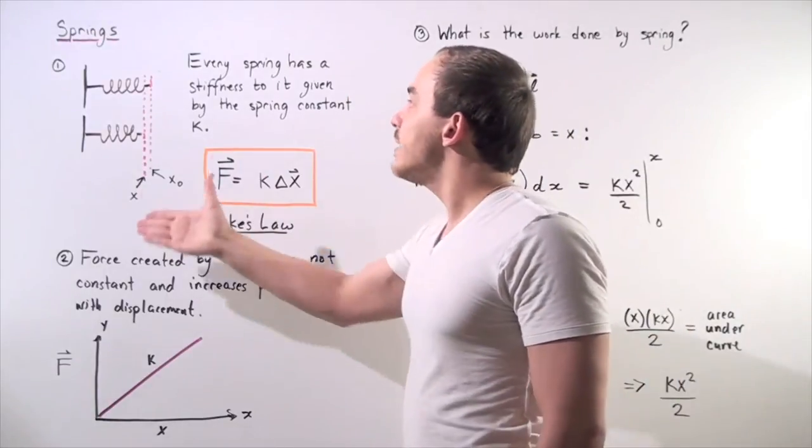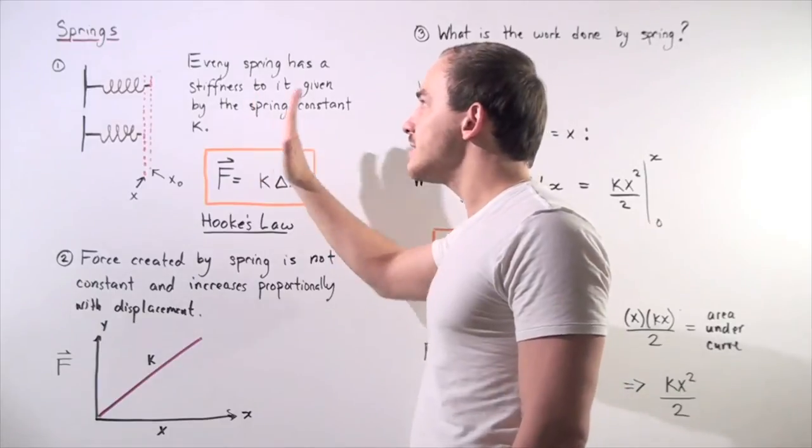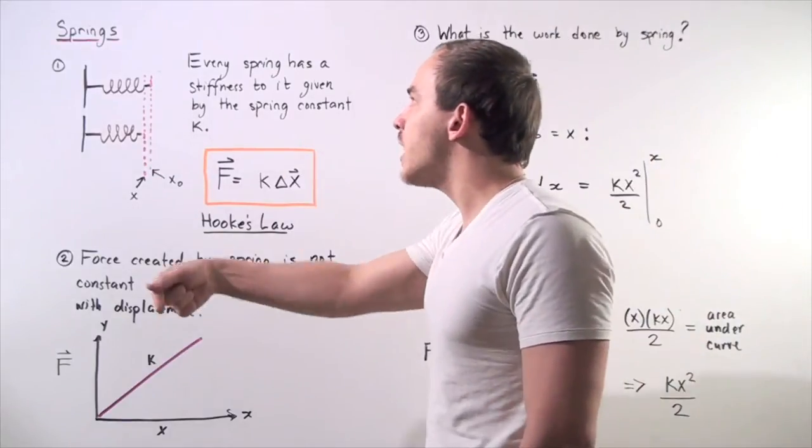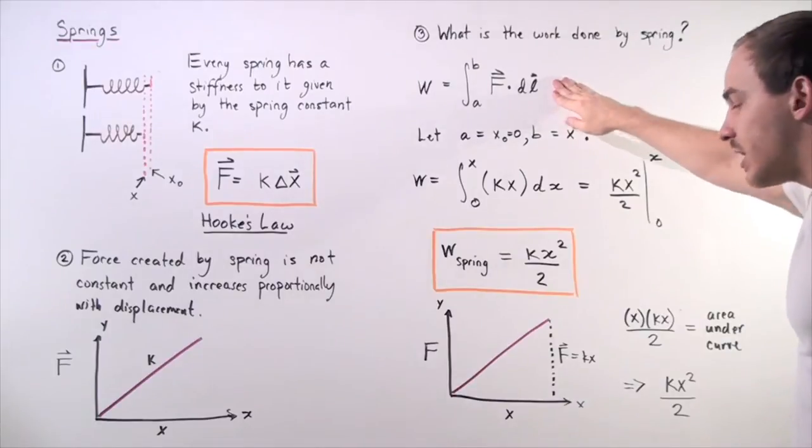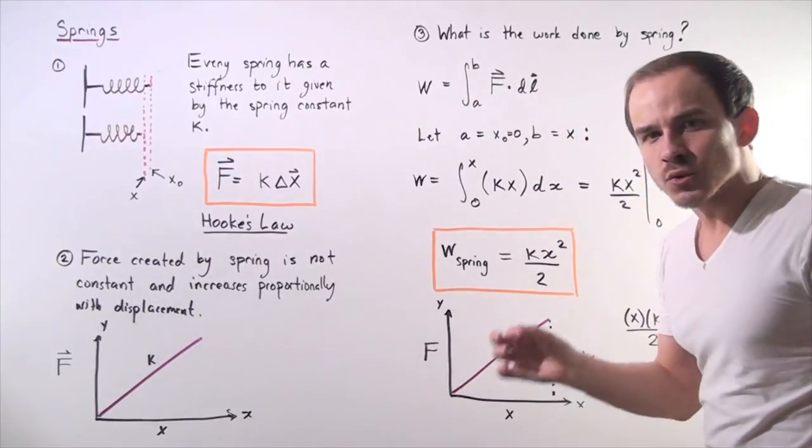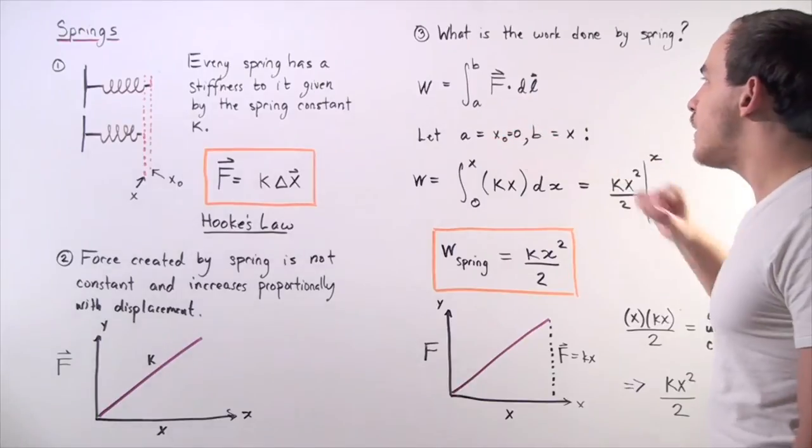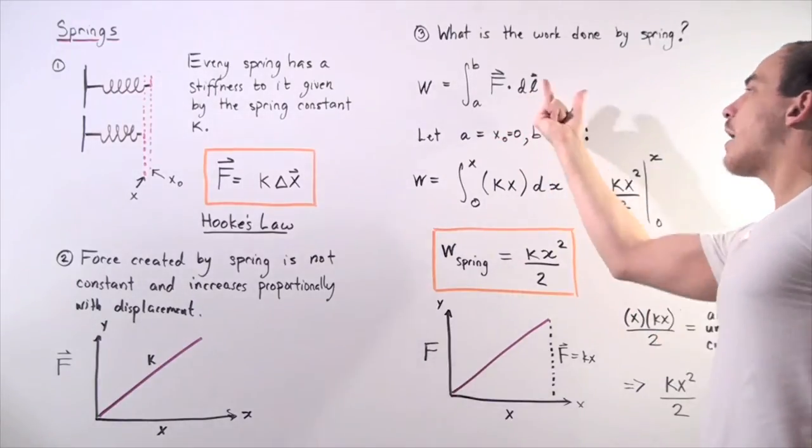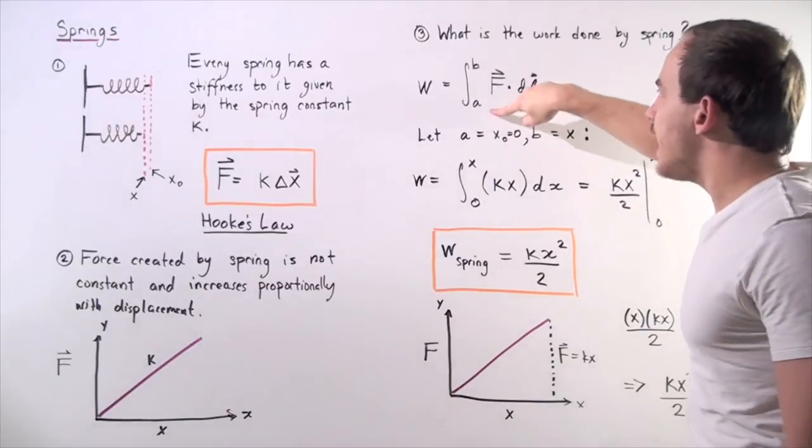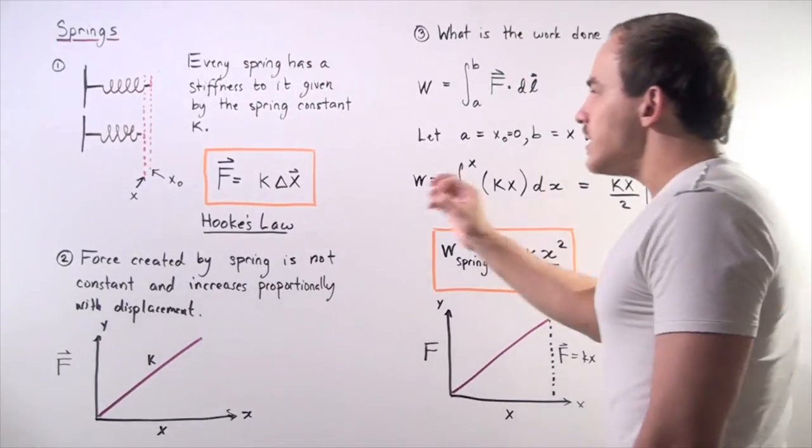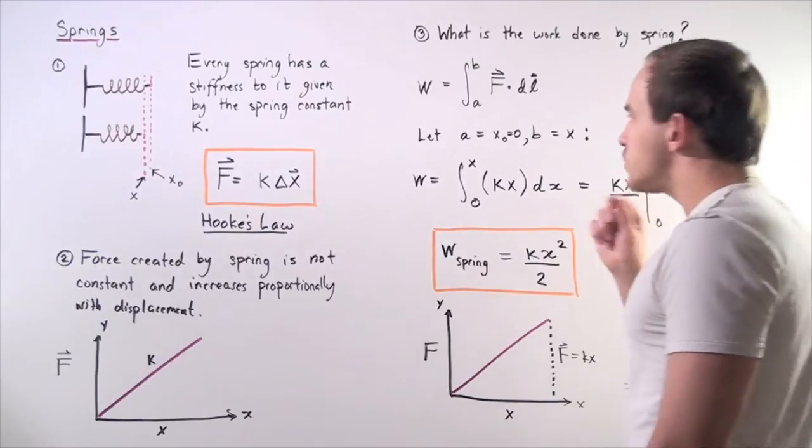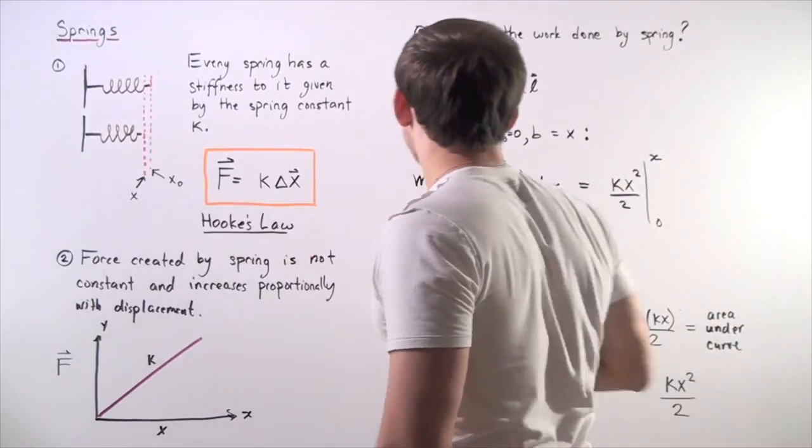So because my force created by the spring on my object, in this case the hand, is not constant, that means if we want to find the work done by the spring on my hand, we have to use the following formula. We have to integrate. So the work done is equal to the integral of the dot product of these two vectors. The infinitely small change in distance, our displacement vector, multiplied by our force vector, and we take the integral from A to B of this dot product. So let's suppose that A is our x-axis and that's zero along the x-axis, and let's suppose our B is the final position x along our x-axis.